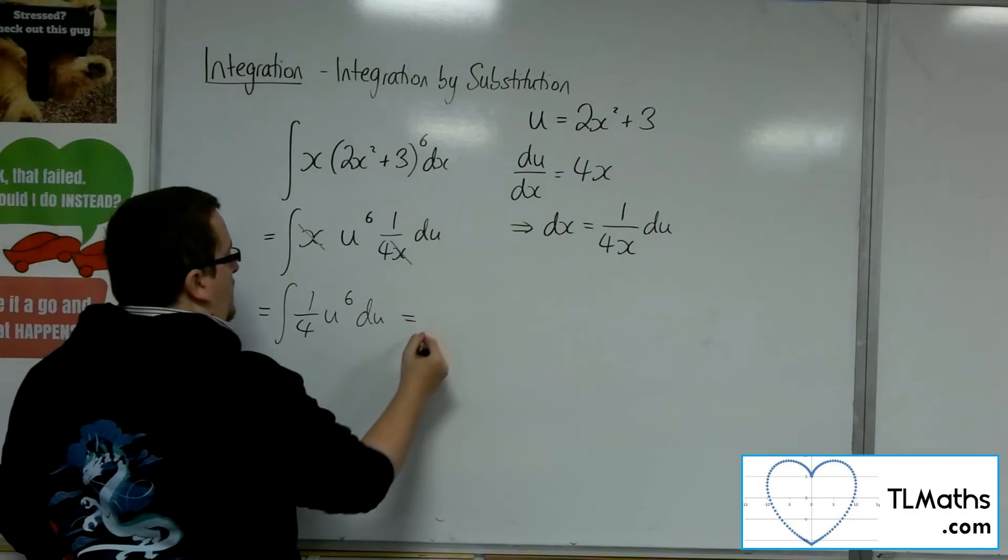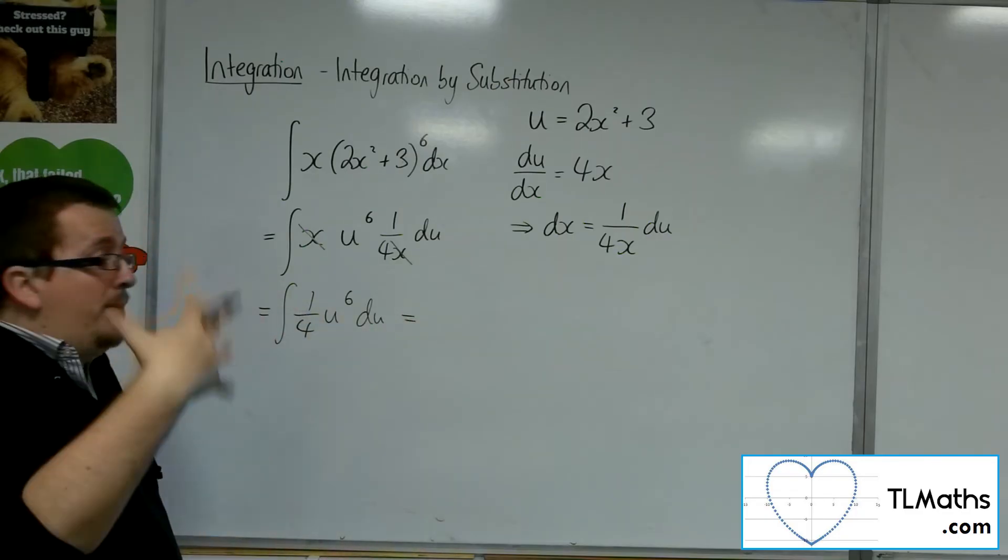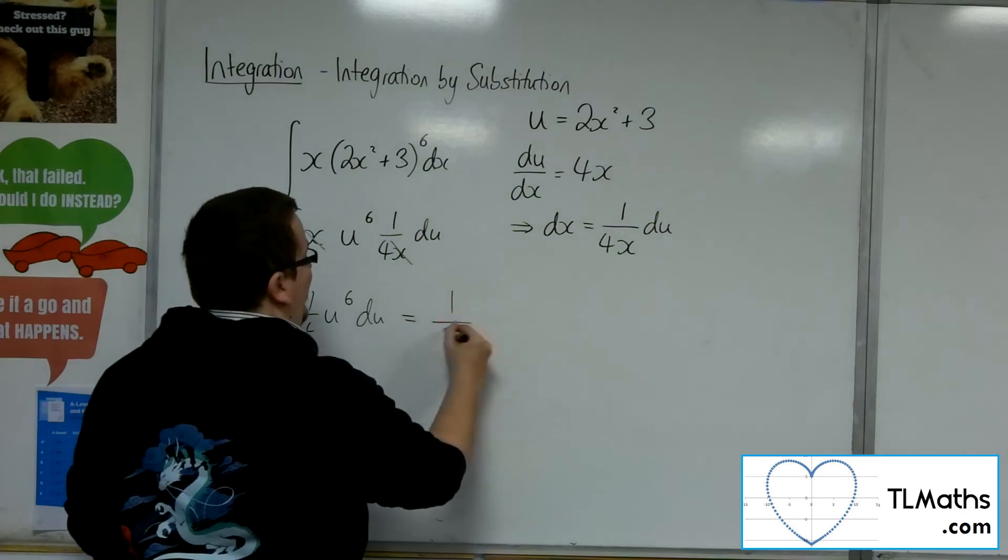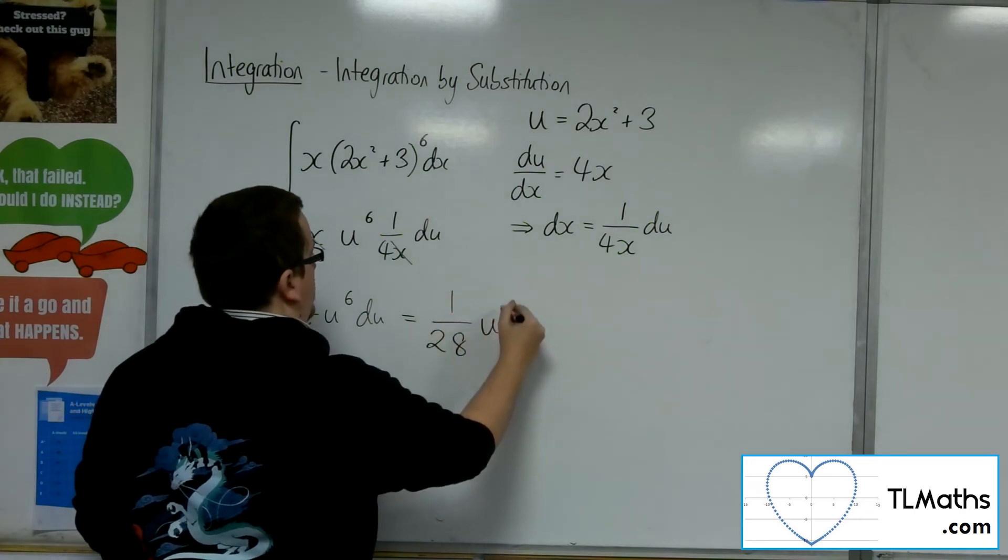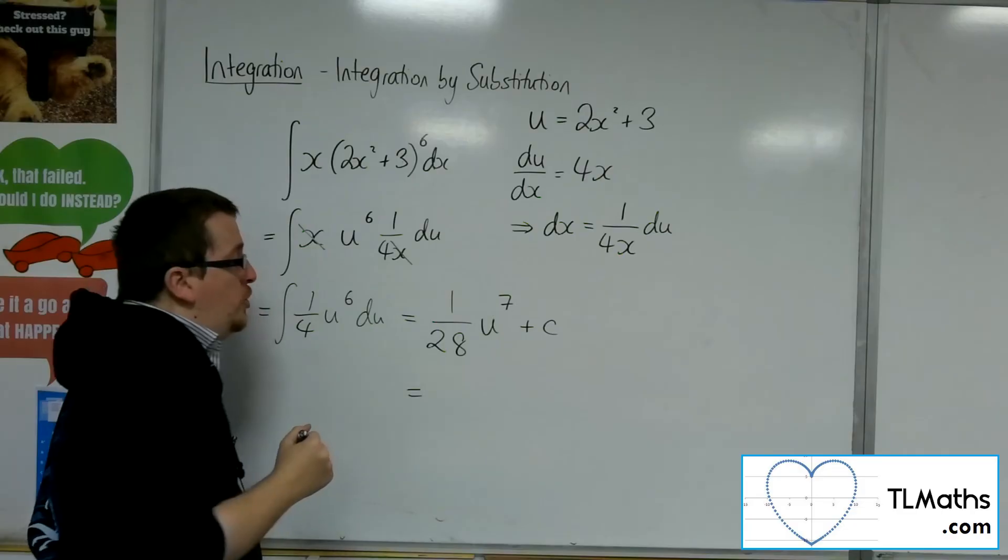So I'm going to add 1 to the power to get 7 divided by the new power. So I get 1 over 28 u to the 7 plus c constant of integration.